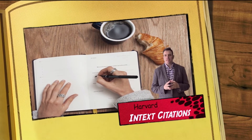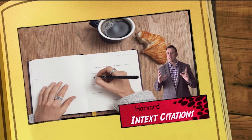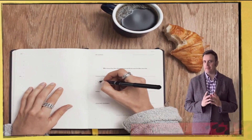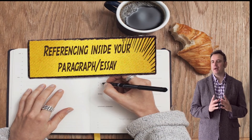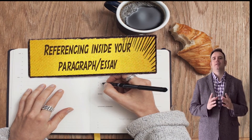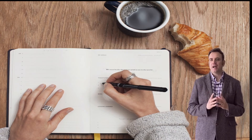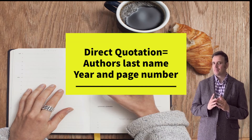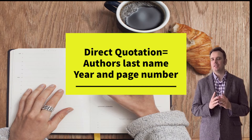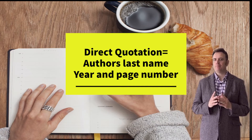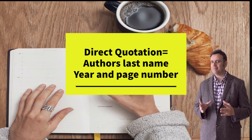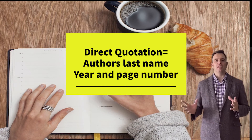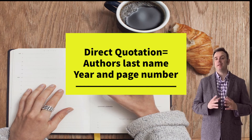Harvard referencing in-text citations — remember, this is where you use your referencing inside your paragraph. For your Harvard style direct quotation, always remember you're going to use the author's last name followed by the year. It's never going to be the author's first name or middle name, and never the day or month. The format is always the family name or surname, followed by the year in brackets.